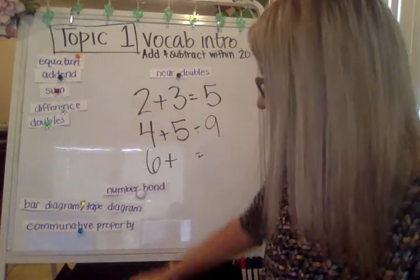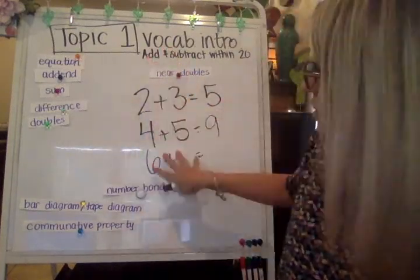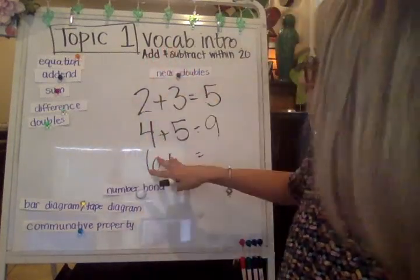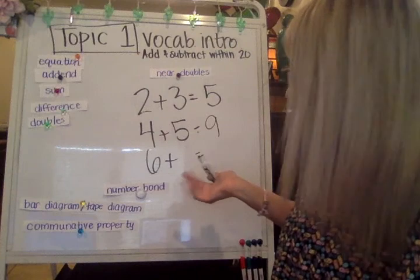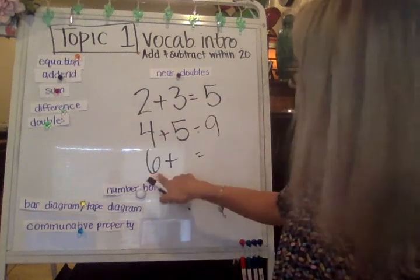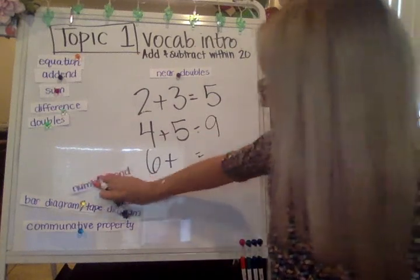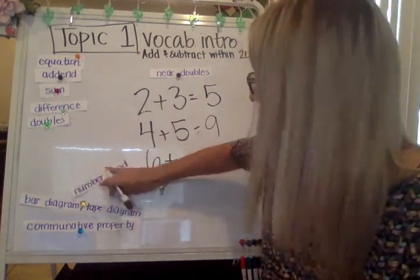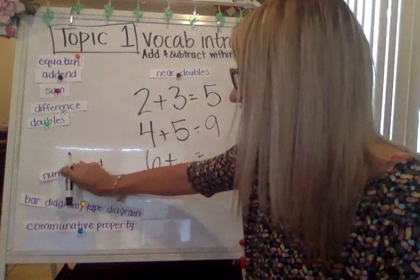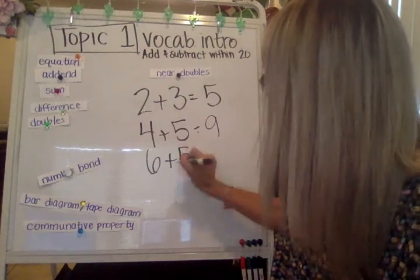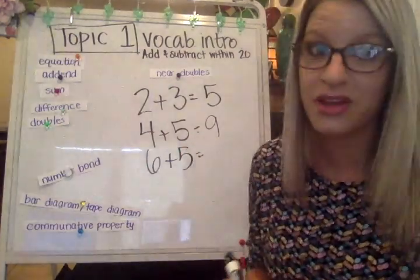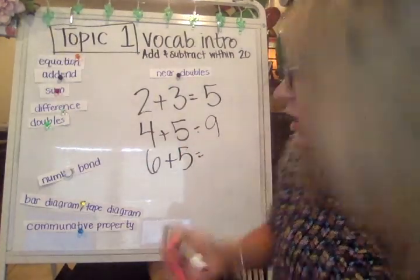Your doubles facts will help with your near doubles. So instead of six plus seven, I'm going to use six plus five as my example, because that's also a near double.